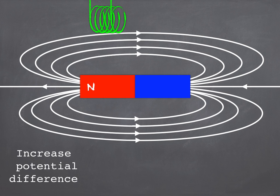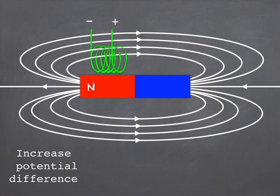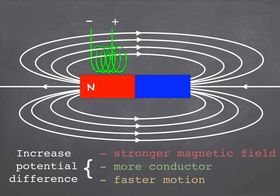The third way is just to move the conductor faster through the field. So any three of those or all three of those will give you a bigger potential difference. More will be induced.